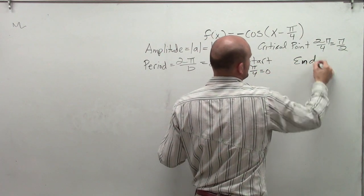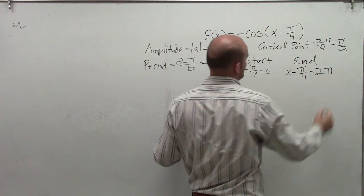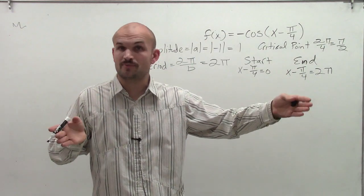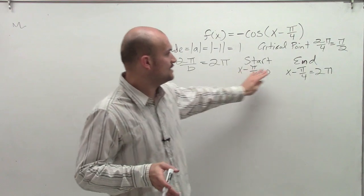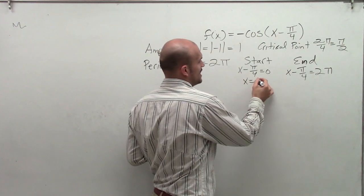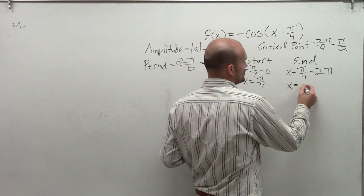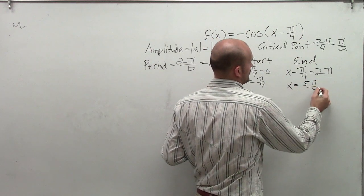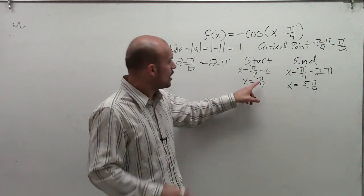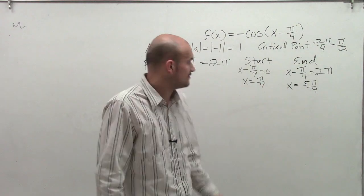Because 0 and 2 pi were your initial beginning and end points of your initial period for your parent graph. So any transformation is going to affect those start and end points. So by solving for x, I get x equals pi over 4, and x is going to equal 5 pi over 4. So when looking at our graph, rather than starting at 0, it's going to start at pi over 4 and it's going to end at 5 pi over 4.